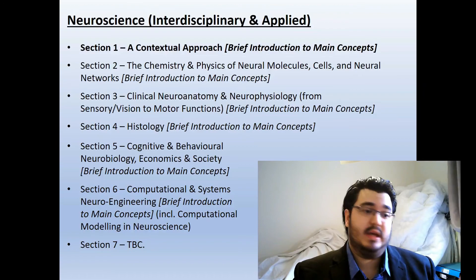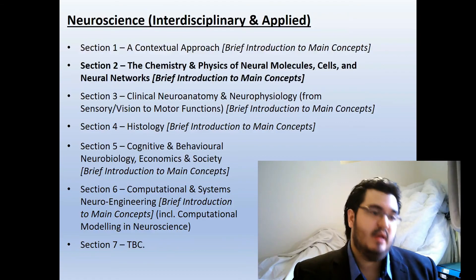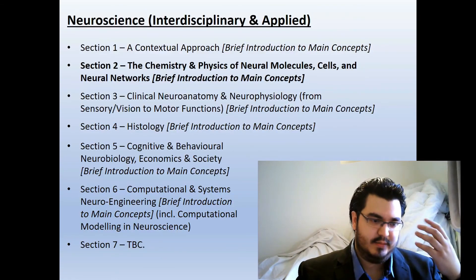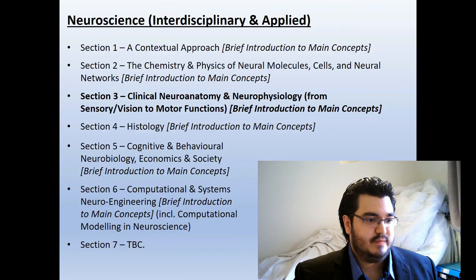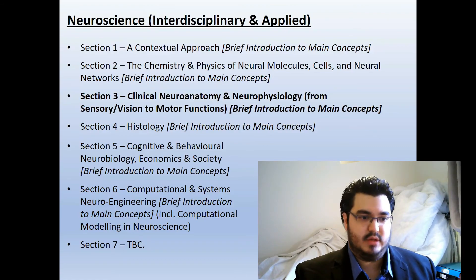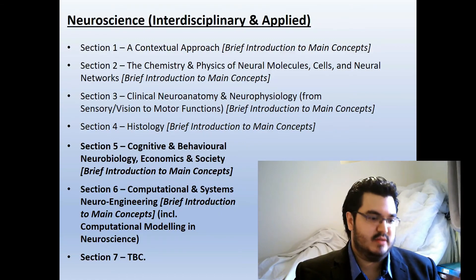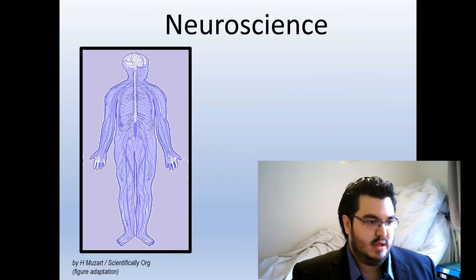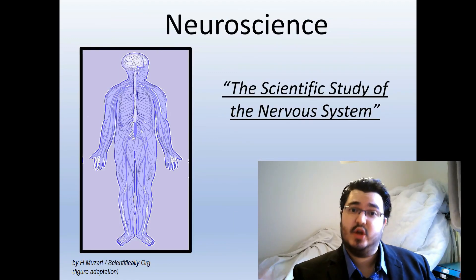We're going to start with this first video, which is Section 1: a contextual approach. Then we'll look at several other sections — the biochemistry of cells, the molecular biology of neural cells specifically, then neuroanatomy and neurophysiology at the organ systems level, then histology in Section 4, cognition in Section 5, and computation in Section 6.